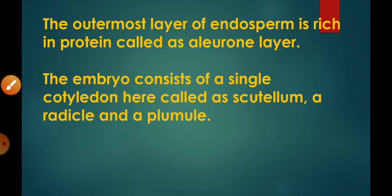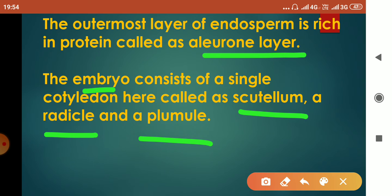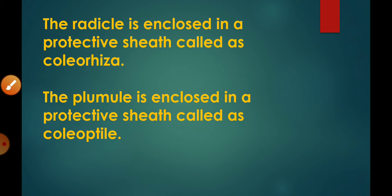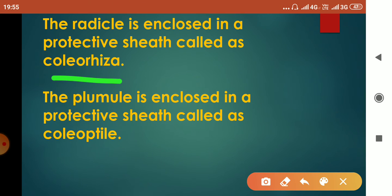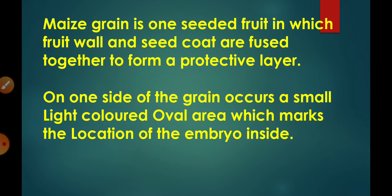The outermost layer of endosperm is rich in proteins and is called the aleurone layer. The embryo consists of a single cotyledon called the scutellum, along with a radicle and a plumule. The radicle is enclosed in a protective sheath called the coleorhiza, and the plumule is enclosed in a protective sheath called the coleoptile. That was about the structure of a maize grain.